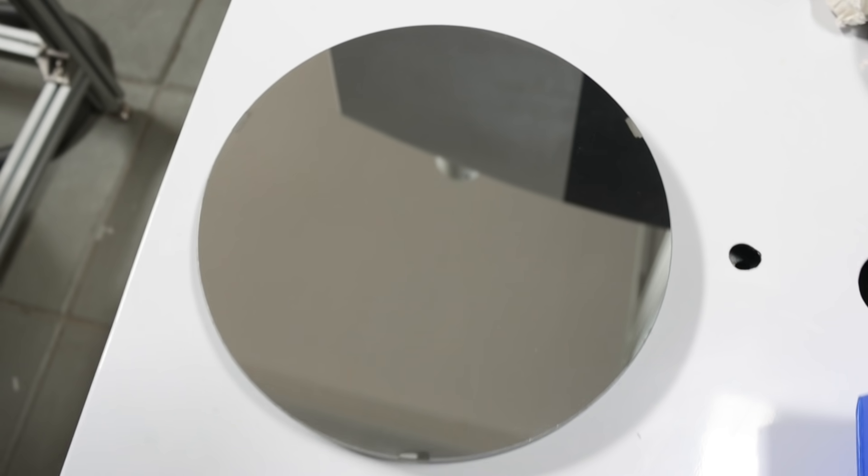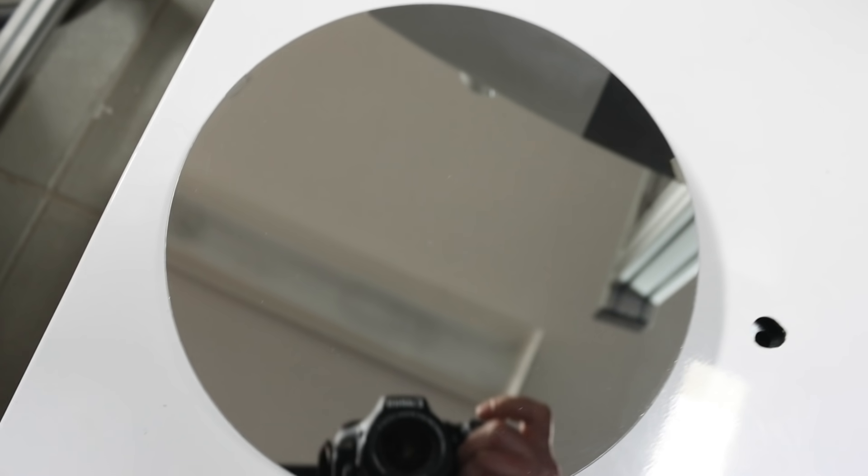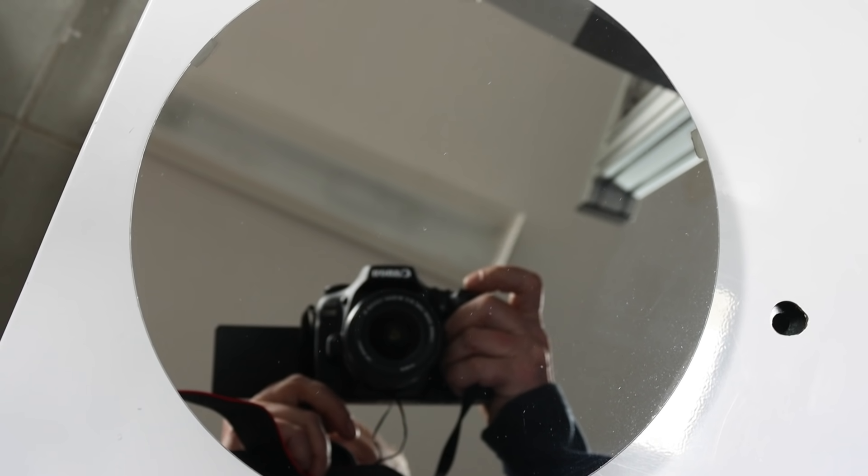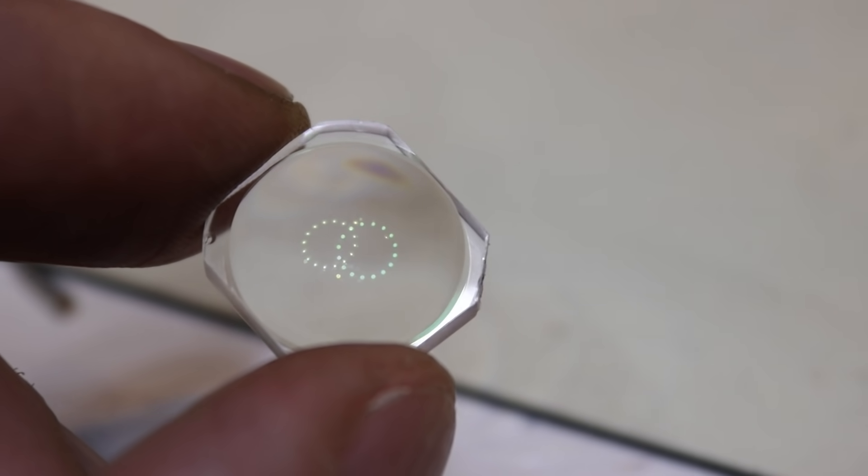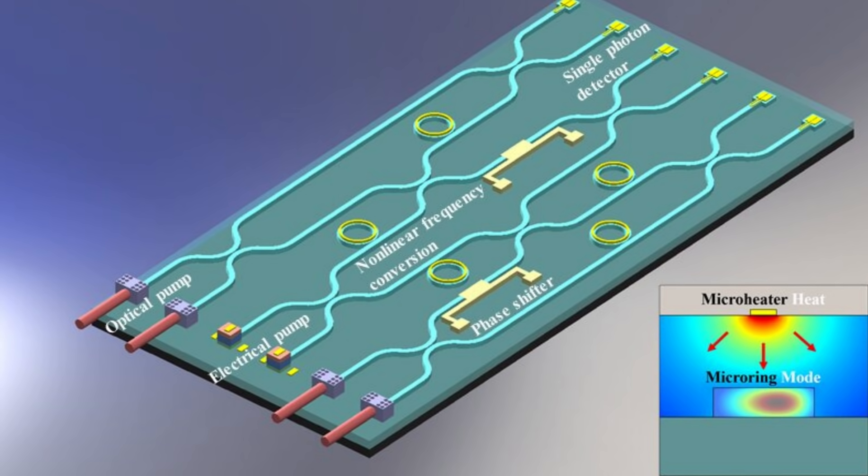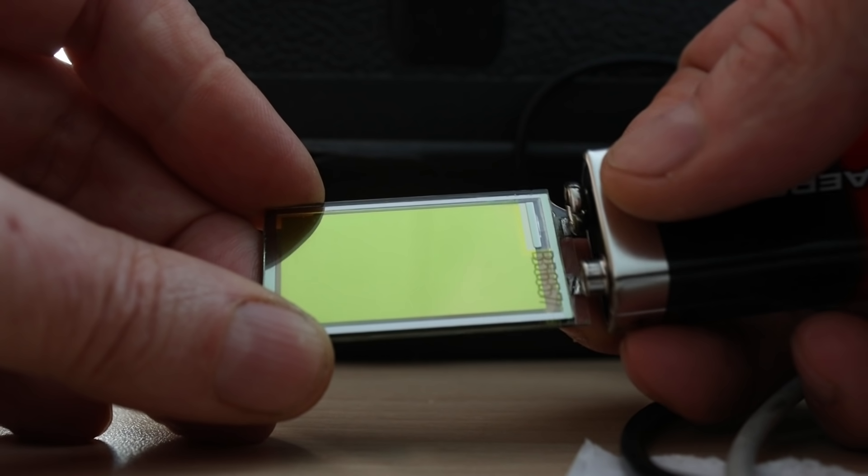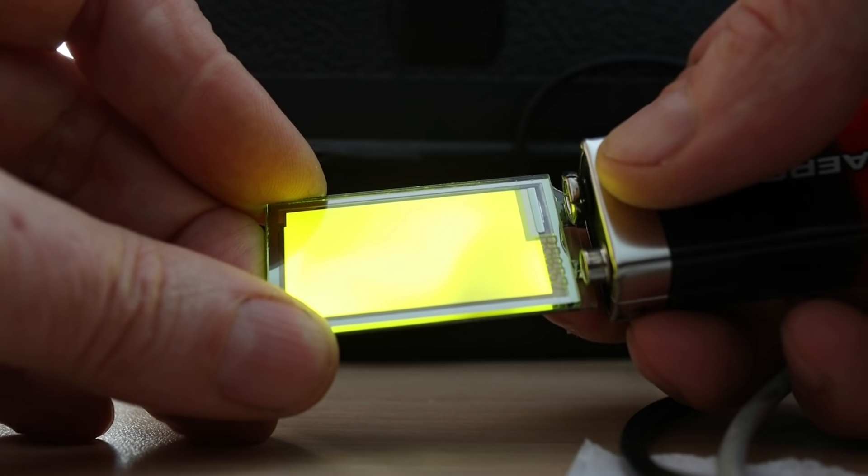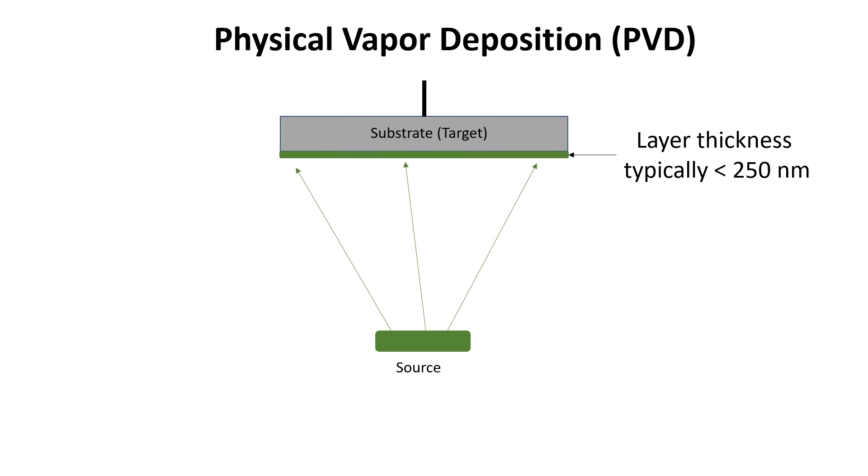When discussing thin films for application in optics, the first things that generally come to mind are reflective layers like those on mirrors, or anti-reflective layers like the ones found on lens surfaces. But you can also think of layers that conduct light, or films that are fluorescent or electroluminescent. One method for making these is by using physical vapor deposition, or PVD for short.